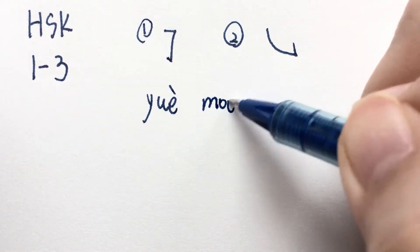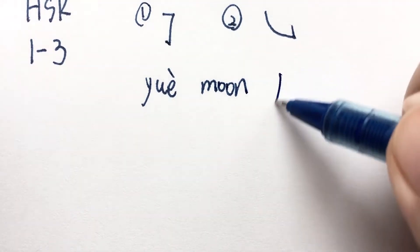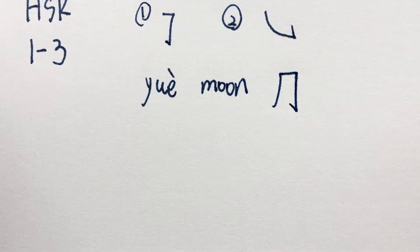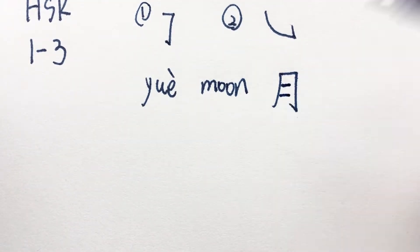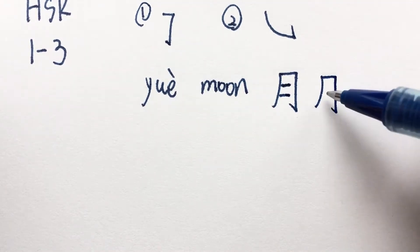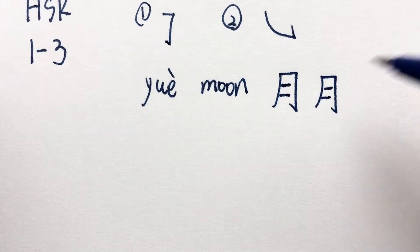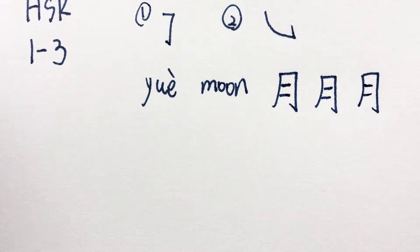Let's see the first new word: 月, which means moon or the month. First stroke is 撇, a left falling, and then a new stroke 横折勾 — horizontal line, turn, and then a hook. Then two more 横, small ones.